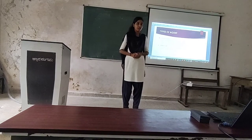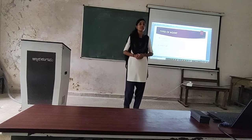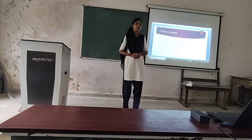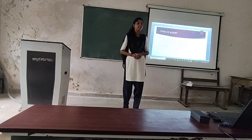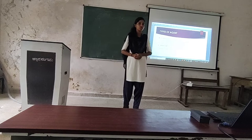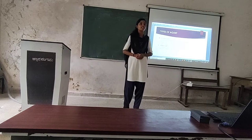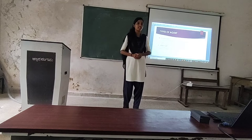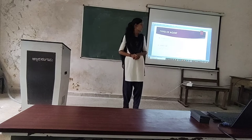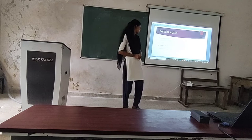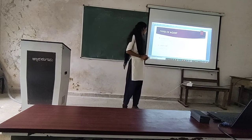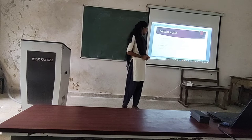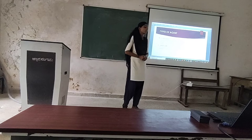Hello everyone. My name is Kada Ambalika. Today I am explaining about types of agents. There are three types of agents: first, universal agent; second, general agent; and third, special agent. A universal agent is one who is authorized to perform all acts or duties that his or her principal is supposed to perform.